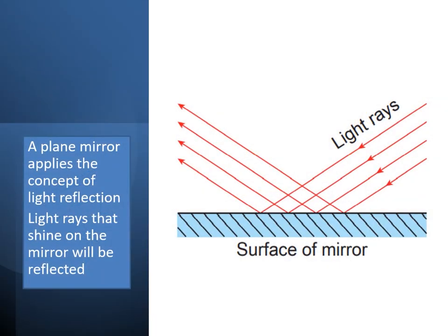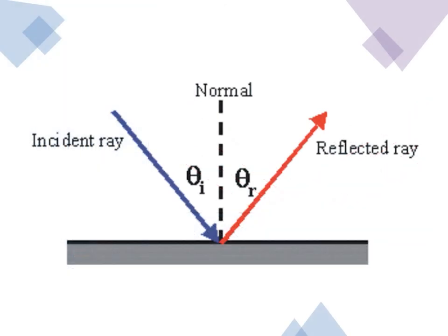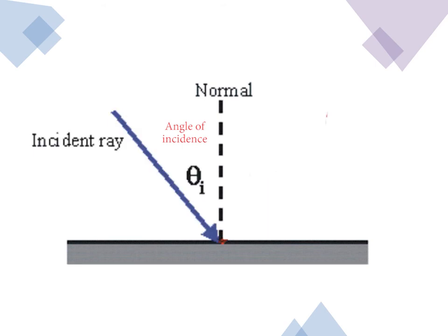A mirror applies the concept of light reflection. Light rays that shine on the mirror will be reflected. What is the relationship between the angle of incidence and the angle of reflection? Let's do an activity to find out.